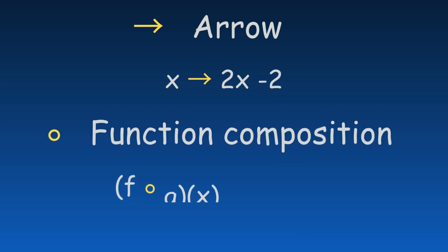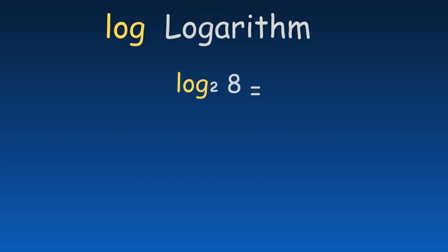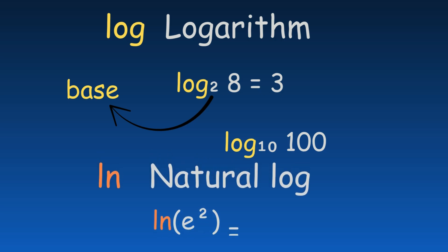An arrow is often used to define a function without giving it an explicit name. Function composition refers to the process of combining two functions into one. The logarithm is the inverse of exponentiation. A subscript indicates the base of the logarithm. If there is no subscript, the base is assumed to be 10. The natural logarithm, written as ln, represents the logarithm with base e.